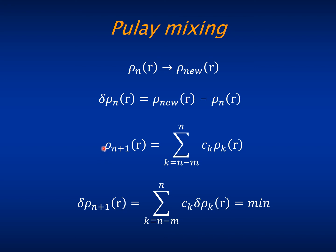So what you can do is to generate a new density for the next step, which is a combination of M previous densities, and you do this by minimizing the size of the expected residuals. You expect that the residuals will also be the same combination of the previous residuals.